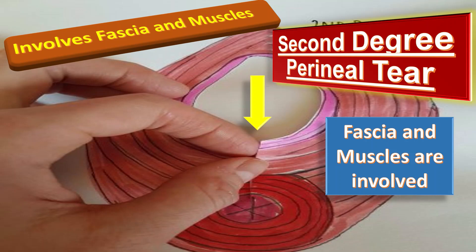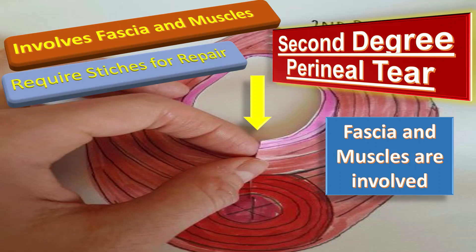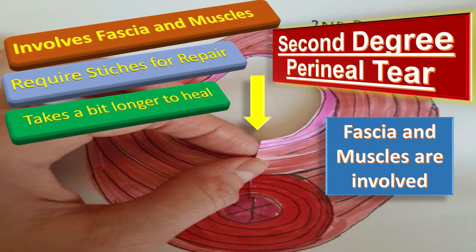Physicians usually use stitches to repair second degree perineal tears. This type of tear takes a bit longer to heal than first degree tears, so we need proper stitches for the alignment of the structures and for healing.